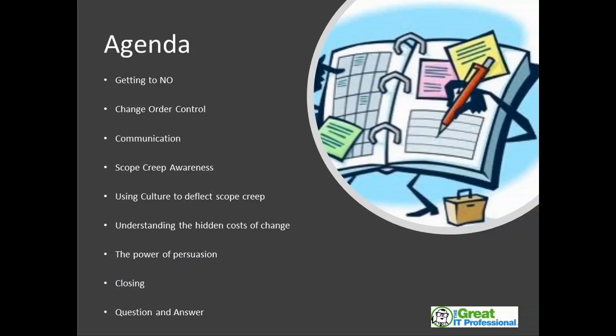The topics are in somewhat of an order, however depending on the project type you might find that some are a little more applicable than others. It also depends on the management style and personality type of the project manager. The first section I'll call 'Getting to Know.' There will also be a section on change order control, communication, scope creep awareness, and using culture to deflect scope creep — I feel culture can be very important to help keep scope creep down.